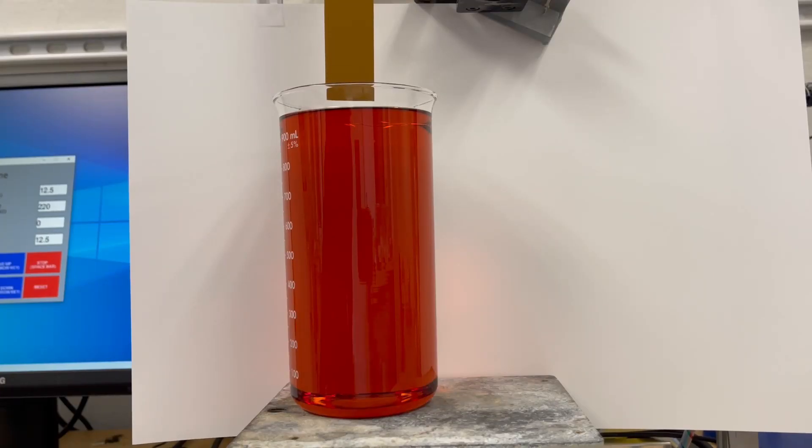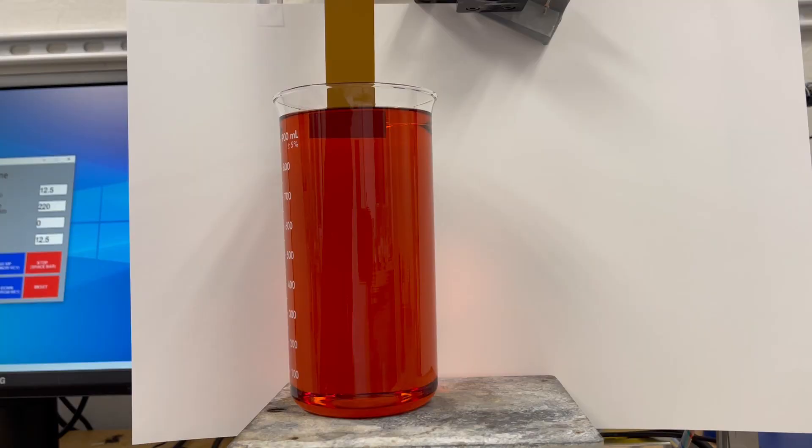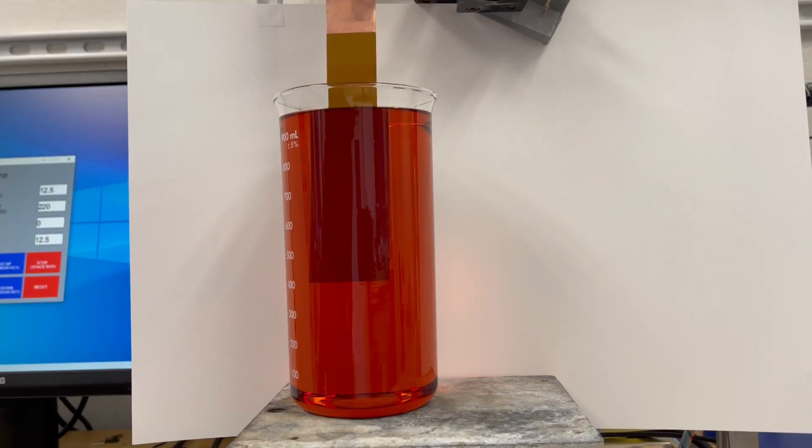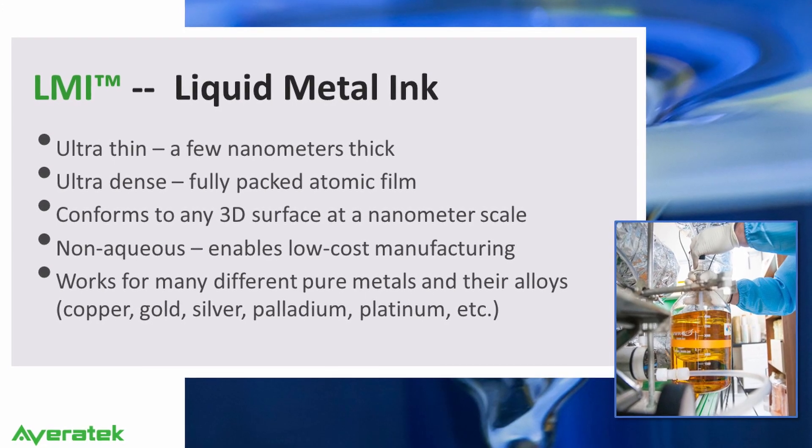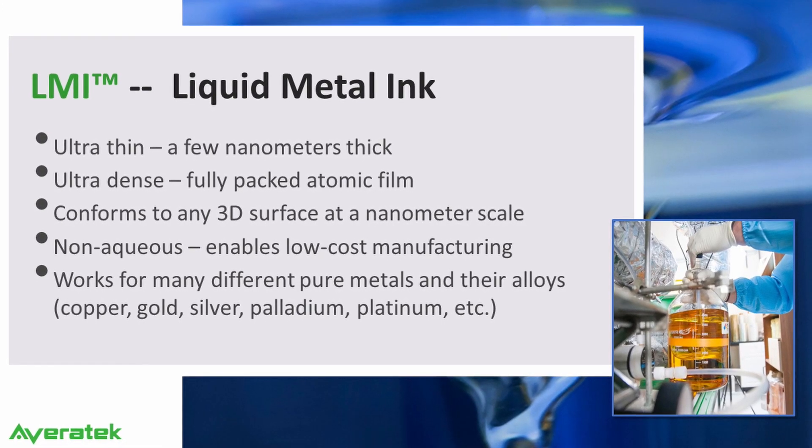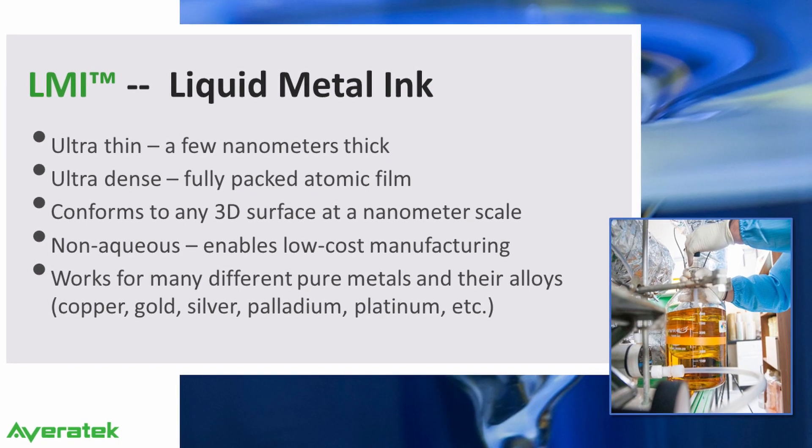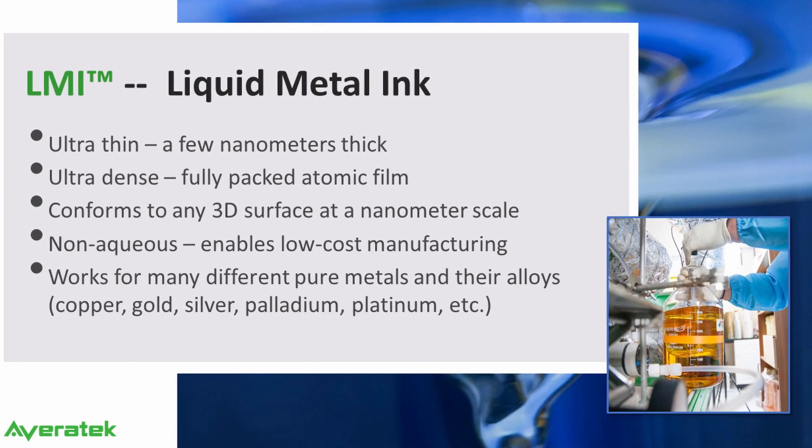Now that we have the bare substrate, the next step is to apply liquid metal ink or the LMI coating. This liquid metal ink is a palladium-based catalyst to be used for the electrolysis copper plating. What's unique about it is that it is ultra-thin, only a few nanometers thick. It's ultra-dense, forming a fully packed atomic film, and it conforms to any 3D surface at a nanometer scale.